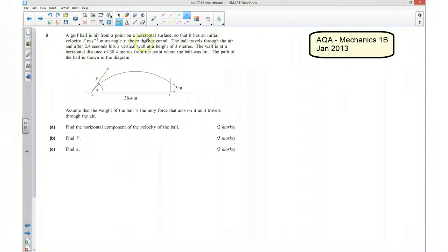A golf ball is hit from a point on a horizontal surface so that it has an initial velocity of v metres per second at an angle alpha above the horizontal. The ball travels through the air and after 2.4 seconds it hits a vertical wall that has a height of 3 metres and the ball is at a horizontal distance of 38.4 metres from the point where the ball was hit and the path is shown in this diagram.